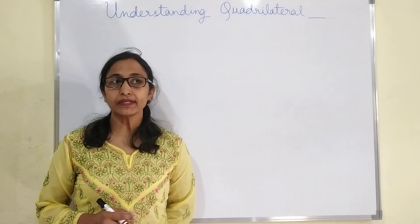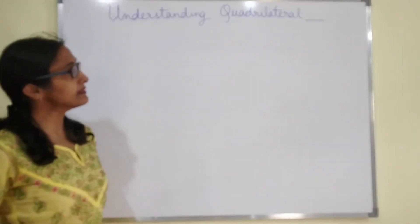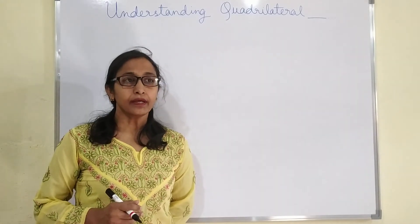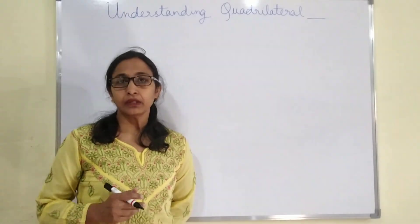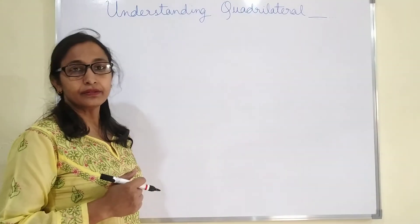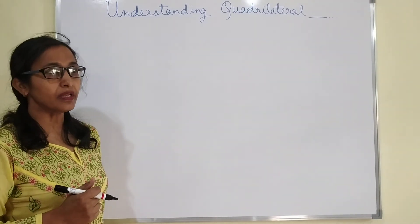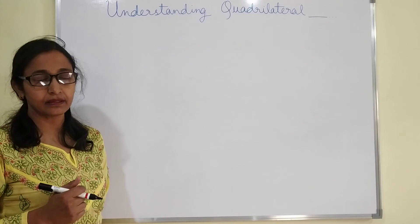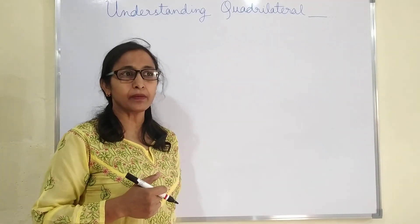Today we are going to start a new chapter on understanding quadrilaterals. In earlier classes, you studied about quadrilaterals and triangles — polygons with 3 sides and 4 sides — and more sides as well, meaning you studied about polygons.